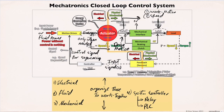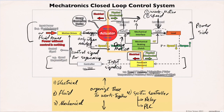Let's look at the system again. The upper side of the closed-loop control system is the power side, and the bottom side is the control side.